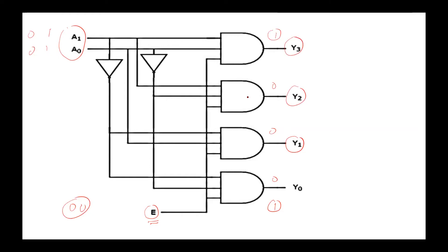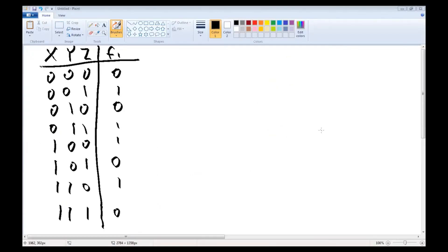The number of AND gates in the decoder equals the number of outputs. If we have N inputs, we will have an array of AND gates each with N inputs from the input states and one additional input from the enable signal.